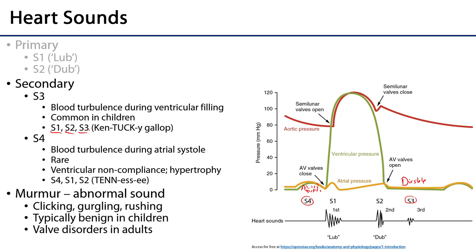S4, if present, is a very rare sound to hear and occurs during atrial systole. The atria are contracting and blood is being forced into the ventricles. S4 is generally heard when the walls of the ventricle aren't compliant — they're not stretching to accommodate that blood. It might be due to hypertrophy of the wall or cardiomegaly for some pathological reason. S4 precedes S1 and S2, so when heard the cadence is S4, S1, S2 — or the word 'Tennessee.'